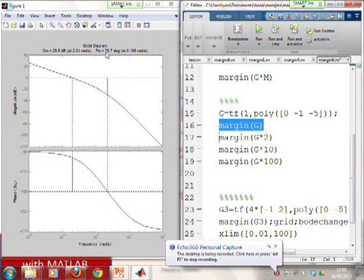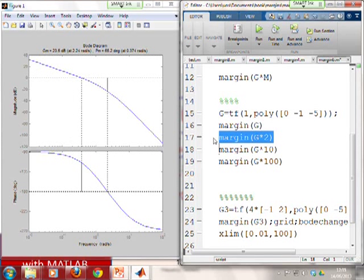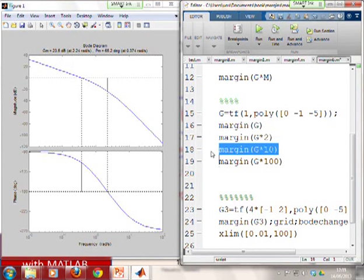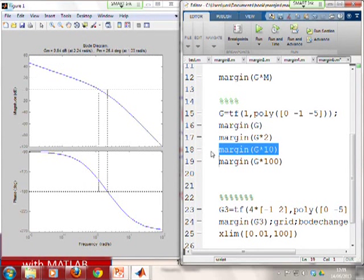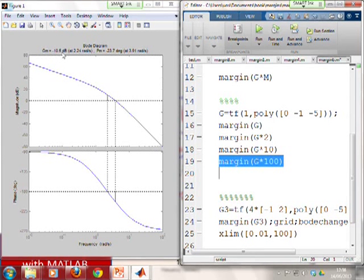And you'll see what have we got at the top. We had an initial margin. We didn't need the phase margin, but the initial gain margin, 29.5 decibels. What happens if I put a gain of 2 in? So I'll go margin G times 2. And what do you notice? 23.5, which is 29.5 minus 6, as expected. Margin G times 10, what do you get? 9.5, which is 29.5 minus 20. And margin G times 100, minus 10.5, as expected.